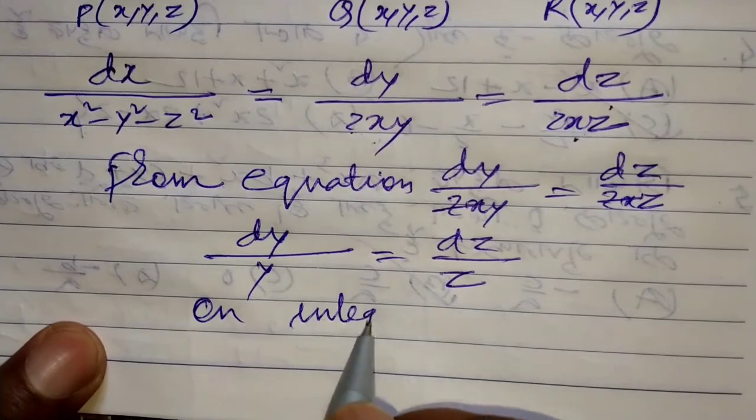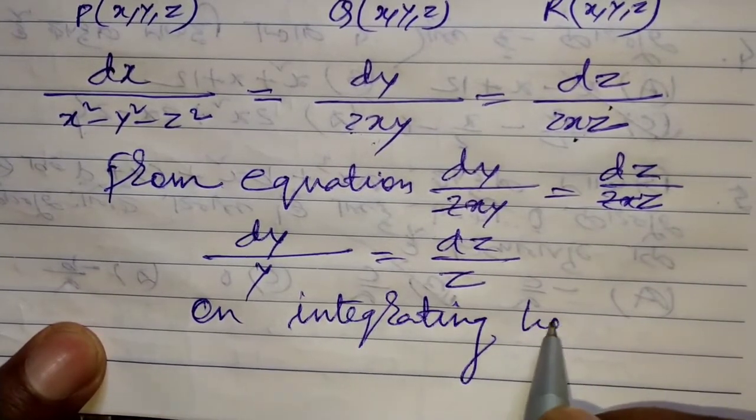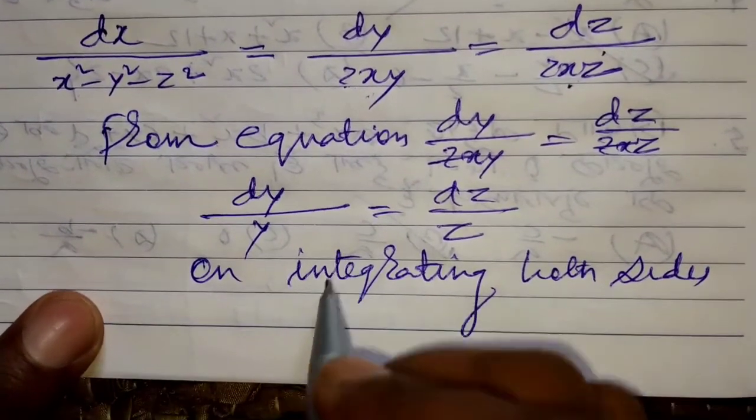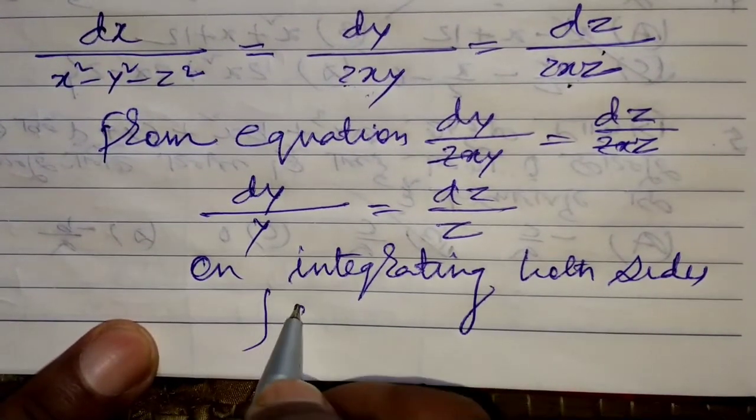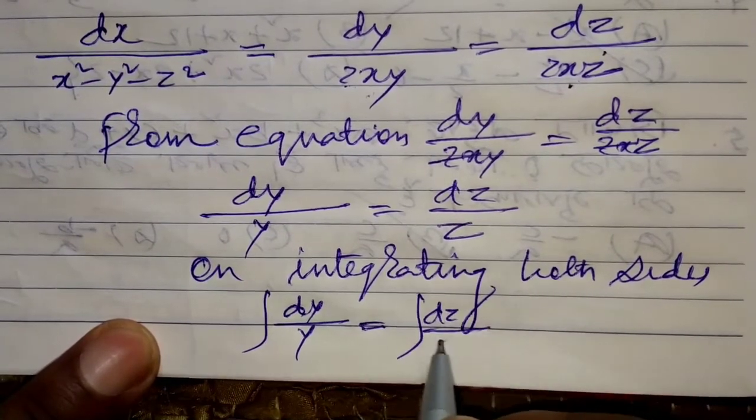On integrating both sides, we get: integration dy/y is equal to integration dz/z.